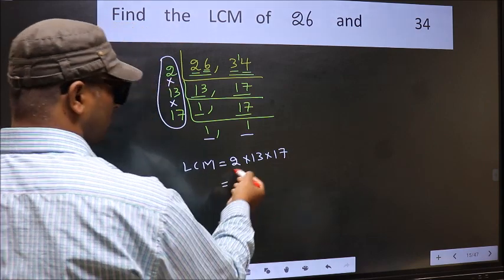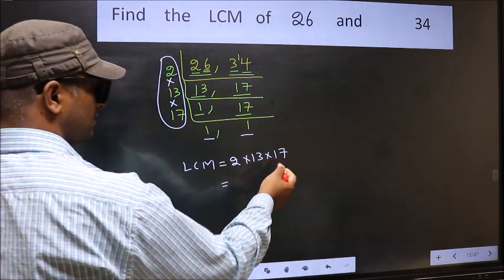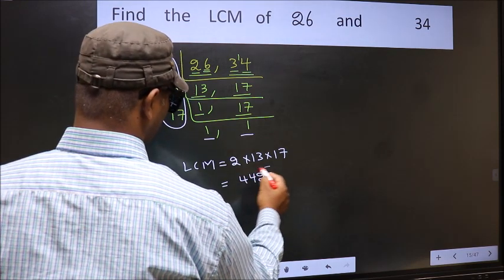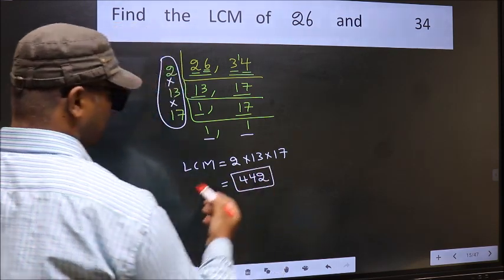So you multiply all these numbers you get 442. This is our LCM.